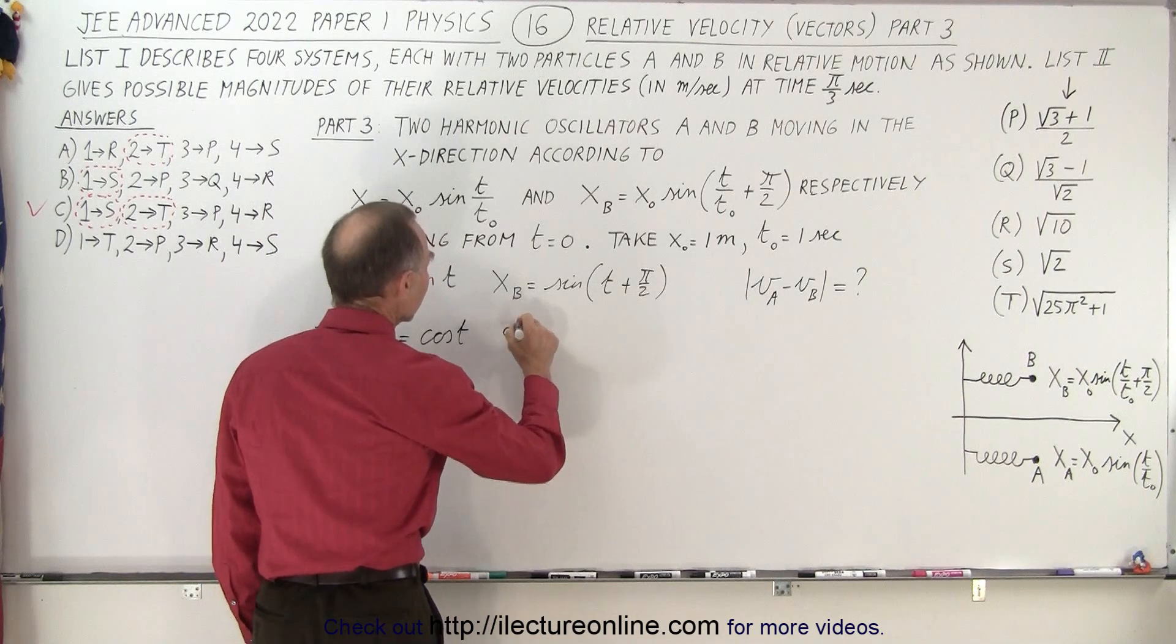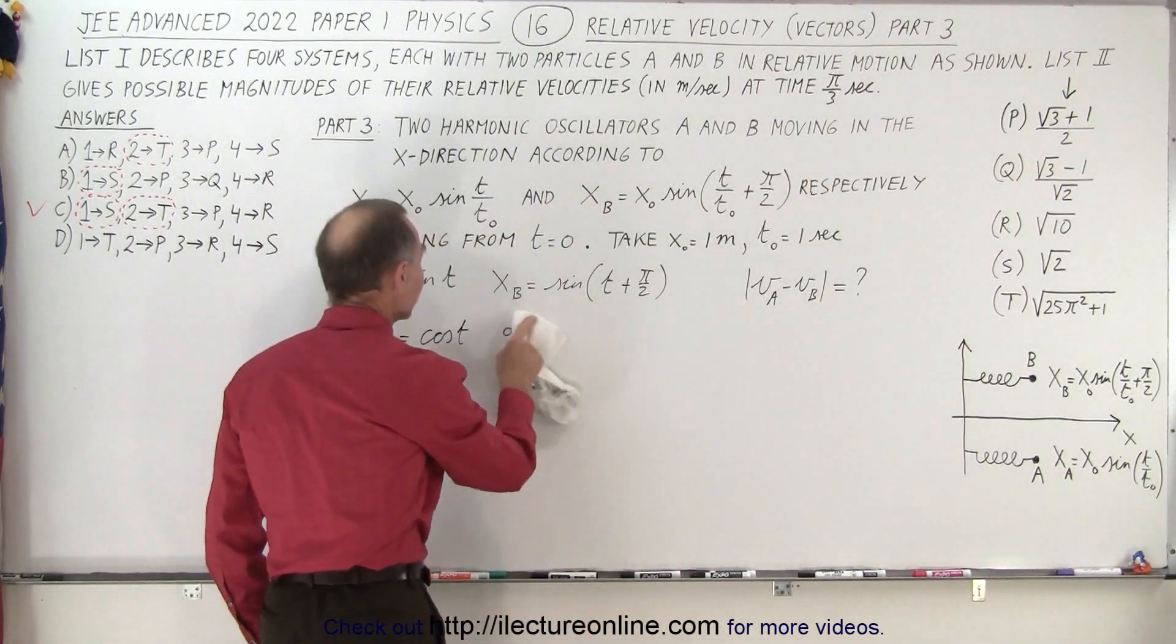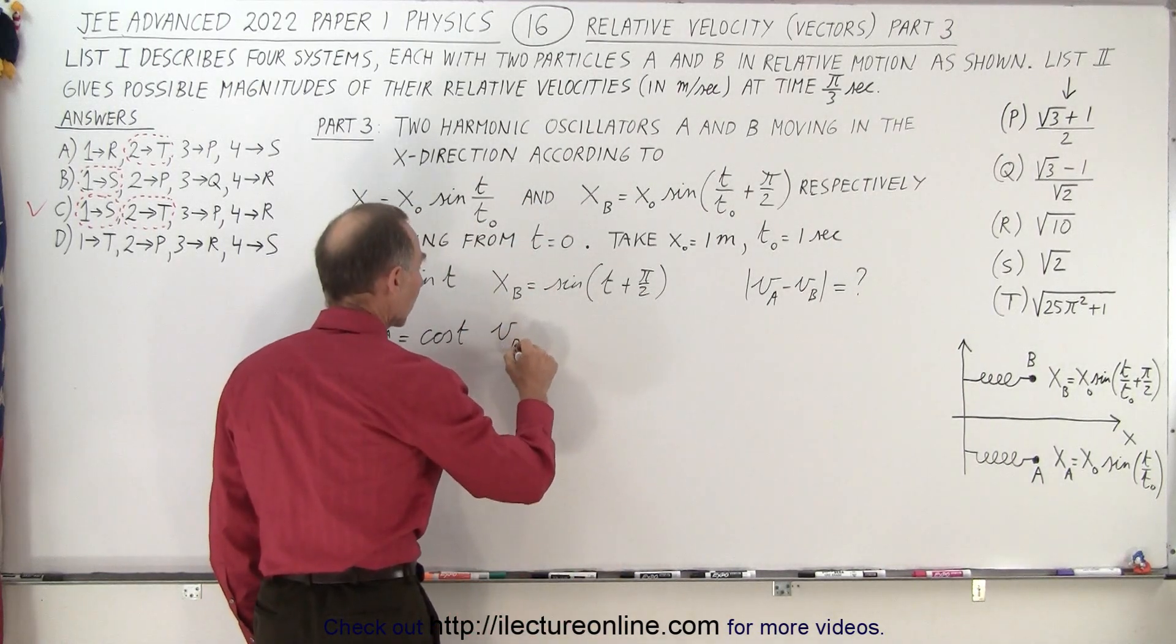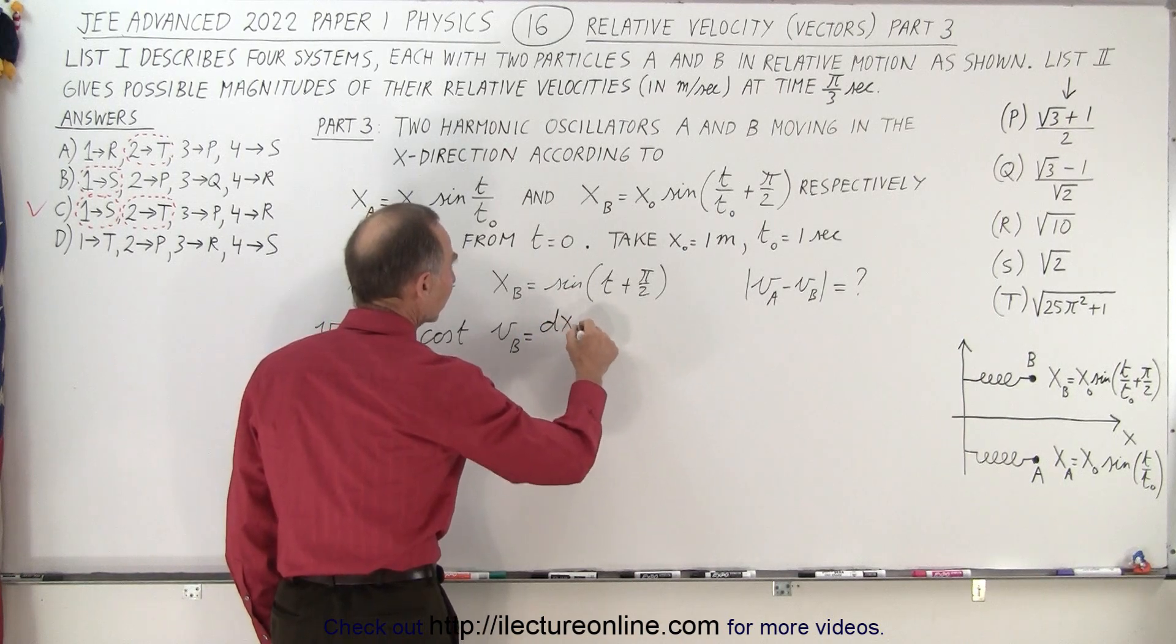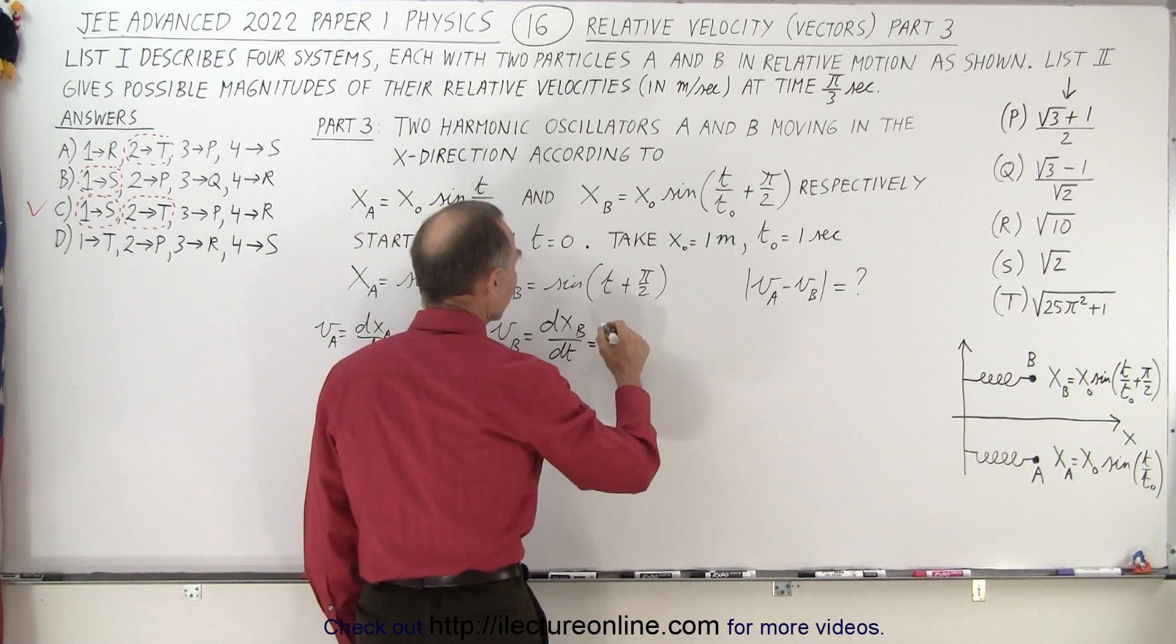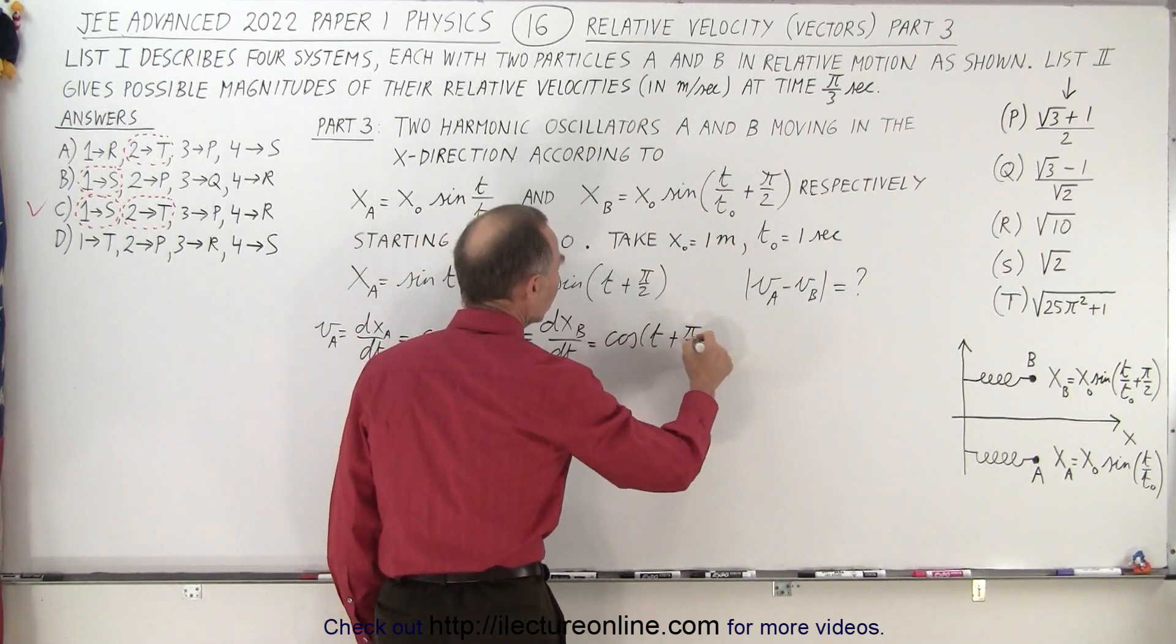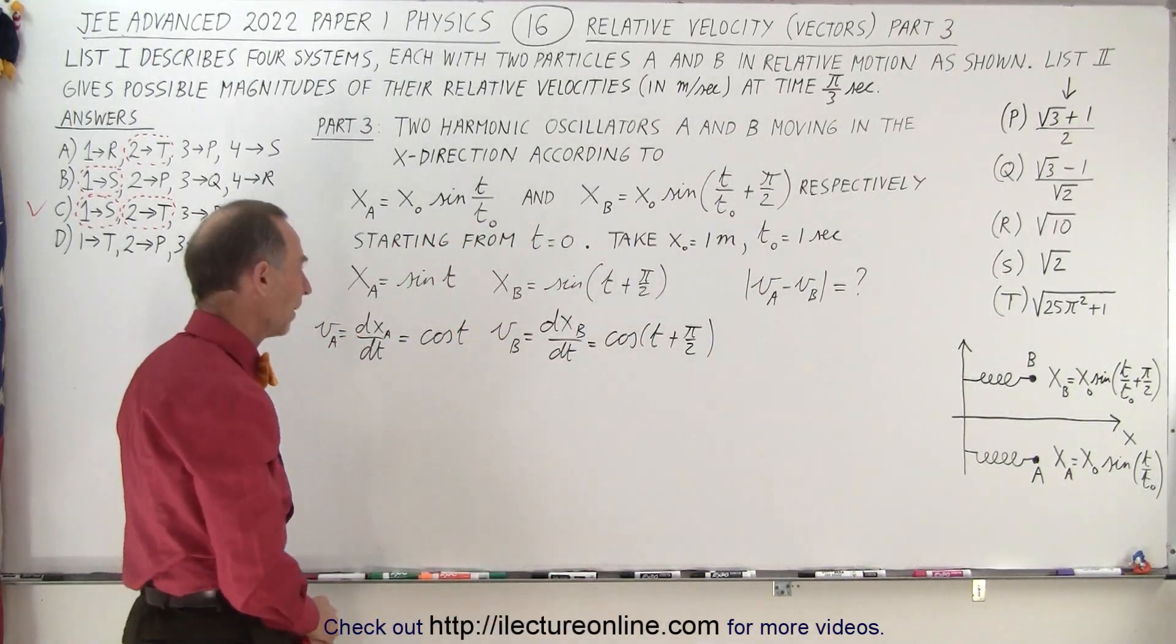Here, actually what I wanted to write was the velocity. So the velocity of b is equal to the derivative of x sub b with respect to time, and so here we take the derivative of sine as the cosine of t plus pi over two, and the derivative of the angle is equal to one, so we don't have to worry about that.